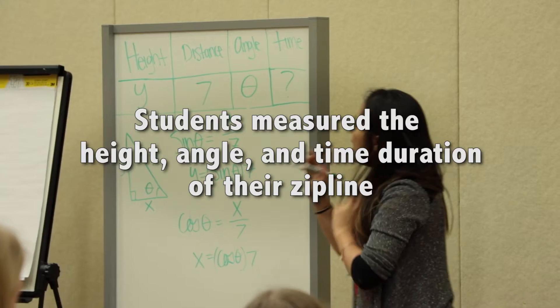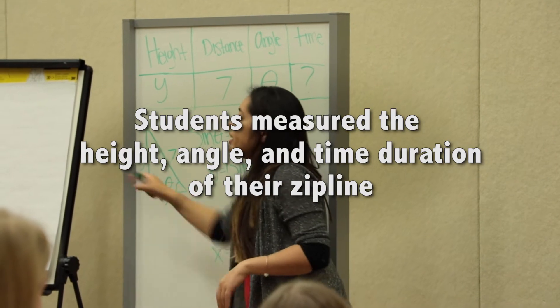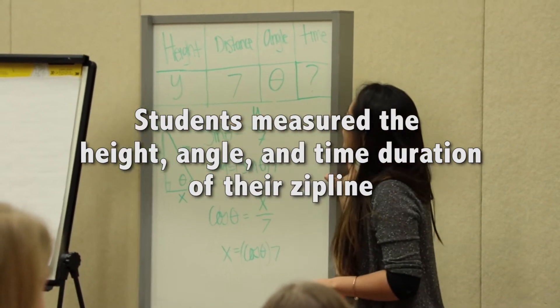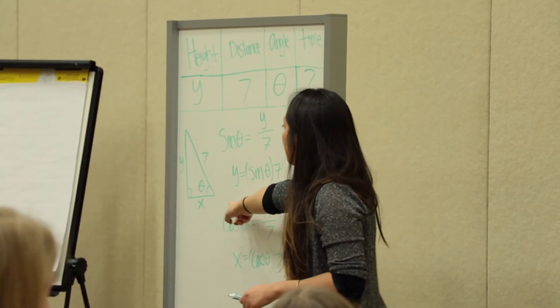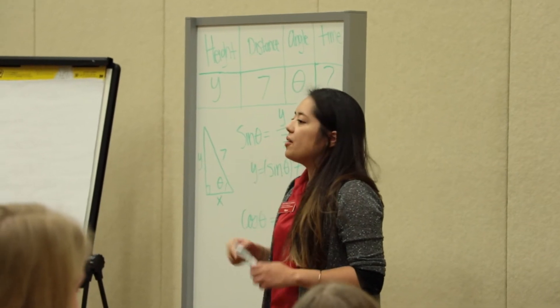We're going to go around and help you with your height. So we're going to measure that for you and you already know your distance, which is 7, and then we're going to find the angle.